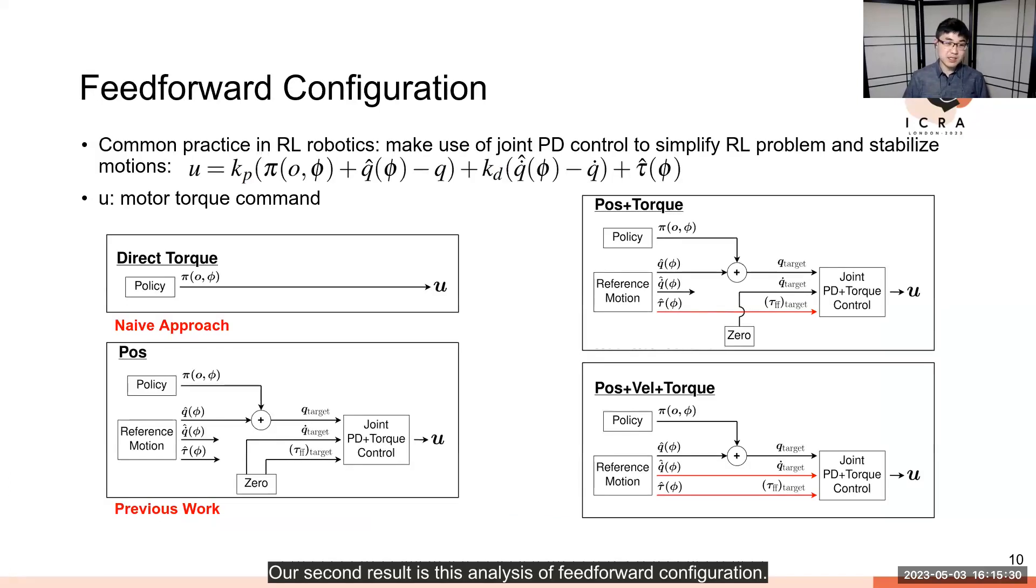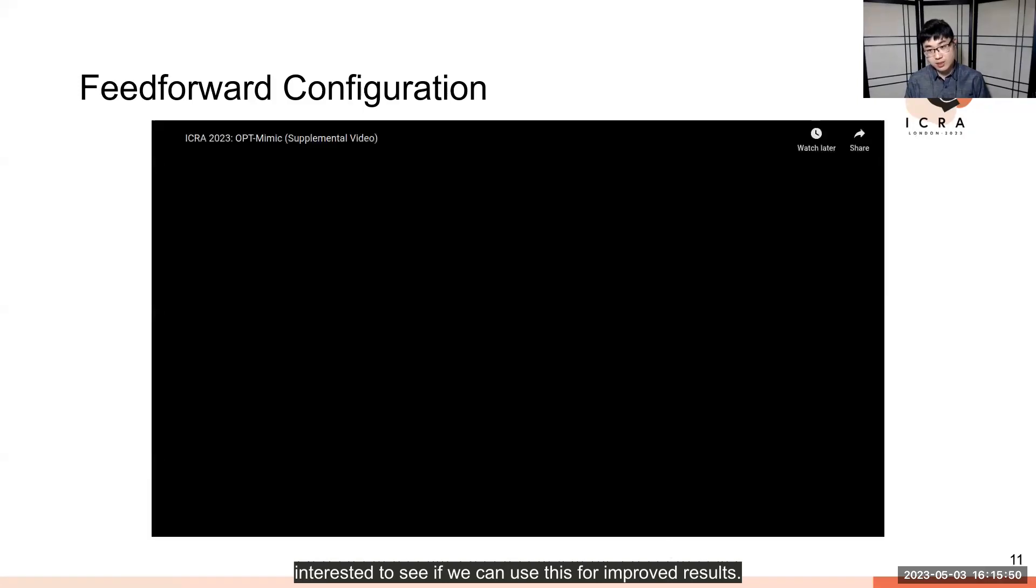Our second result is an analysis of feedforward configuration. Using trajectory optimization as a reference for RL, we are given additional information about joint velocities or torques that is physically feasible. However, past work discarded this information. In our research, we were interested to see if we can use this for improved results.